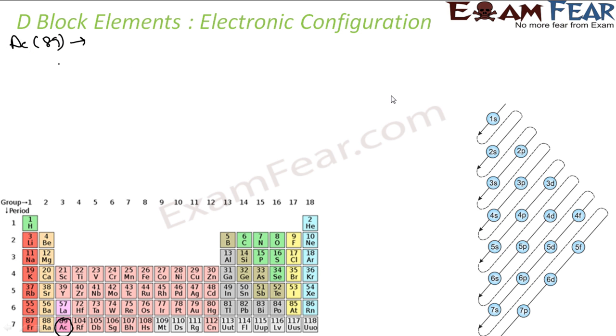So 89 will start in the series 1s2 2s2 2p6 3s2, then 3p6 4s2, then we have 3d10 4p6. We have 5s2 4d10.